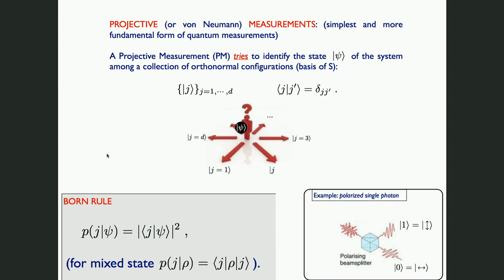A projective measurement is a procedure that allows you to test whether a given initial state of your system psi corresponds to one of a possible list of candidates. These candidates are orthogonal vectors — a basis of your space — over which you can expand the state. The result is not deterministic in general, but characterized by a probability given by the squared projection between psi and one of the basis elements. This is essentially the Born rule.